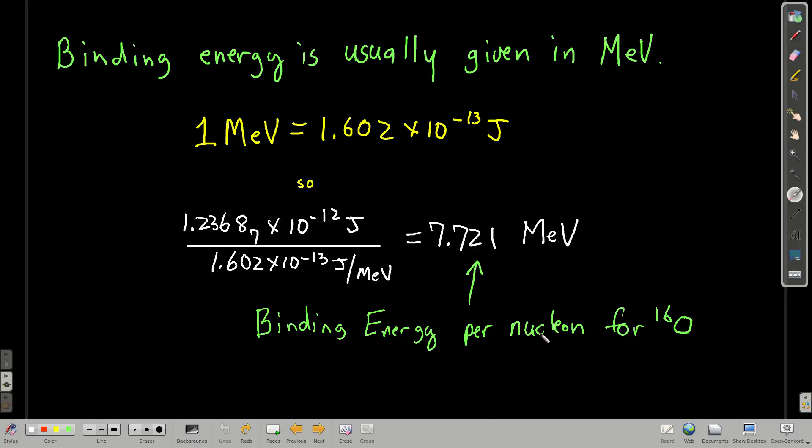And this is a useful number, because if we compare binding energy per nucleon for different elements, different isotopes, we get a feel for their stability, because remember, this is how much energy you'd have to put in to break them apart.